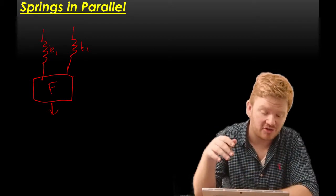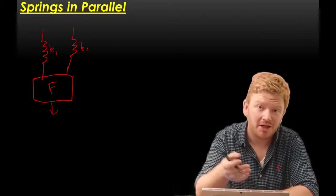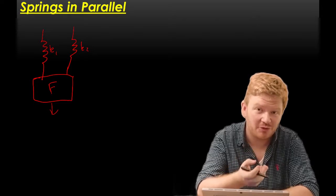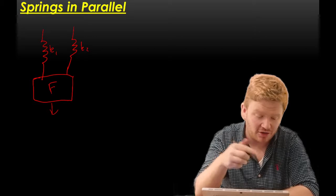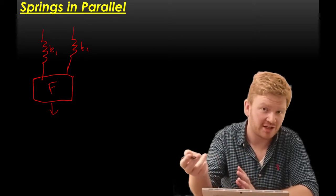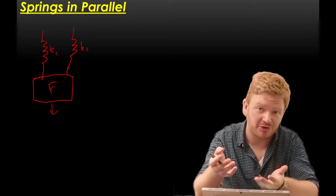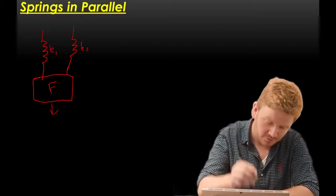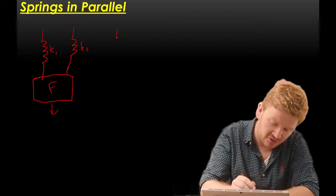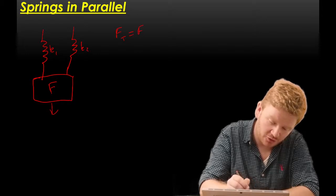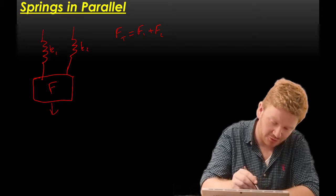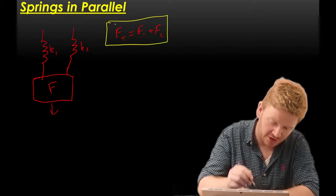I can't say that the force is going to be shared equally, because if one spring is really stiff, then it's going to require more force than the other spring. So I can't just say F on k1 is a half F or anything like that, because I might have different spring constants. But what I can say is that the total force Ft is equal to the force on the first plus the force on the second. So that's my first key equation.